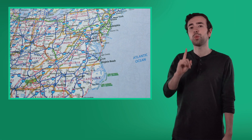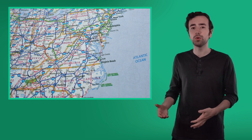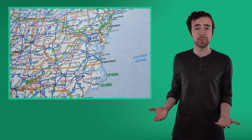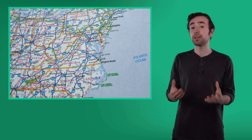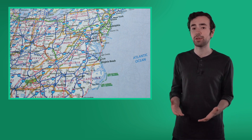Road maps are just one kind of map. They provide information about roads, highways, cities, and landmarks. They use symbols and labels to provide information for people who are traveling.